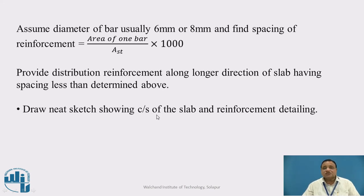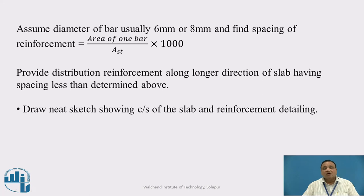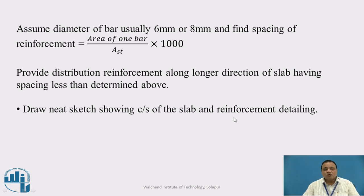Draw a neat sketch showing the cross-section of the slab and the reinforcement detailing. In reinforcement detailing, the main reinforcement runs along the shorter span and the distribution reinforcement is placed over it along the longer span. For the main reinforcement, alternate bars are bent up — a minimum of 50% of the steel should go up to the end, so alternate bars will be bent up for the main steel.